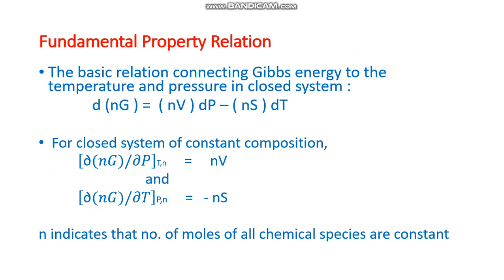From this equation for a closed system of constant composition we can write this equation as ∂(nG)/∂P at constant temperature and n is equal to nV. Similarly, ∂(nG)/∂T at constant pressure, n is equal to minus nS.